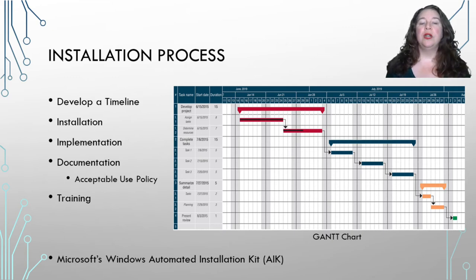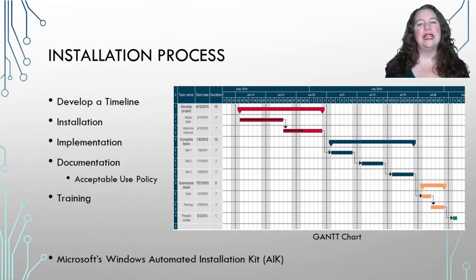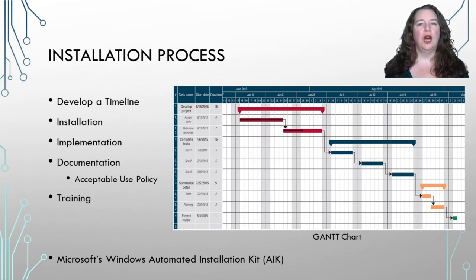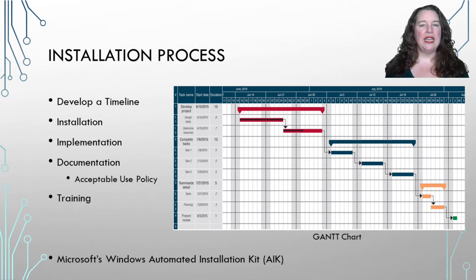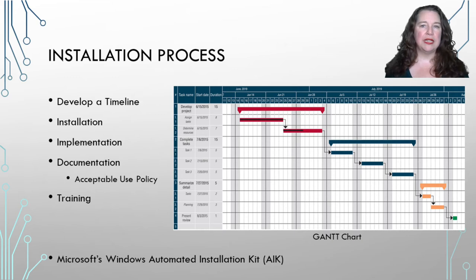Microsoft has a Windows Automated Installation Kit, or AIK, which creates a disk image with the operating system, drivers, and applications — an ideal clone of the computer you want. By building that clone you can copy it onto multiple devices easily and quickly. You can take a new computer out of the box, put this clone image on it, and it will install the OS, drivers, and applications correctly, keeping all your devices consistent.